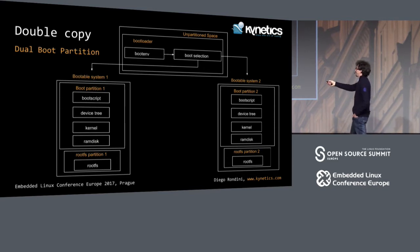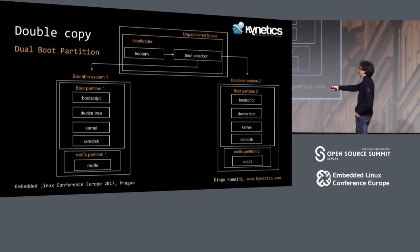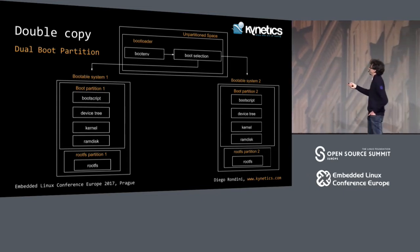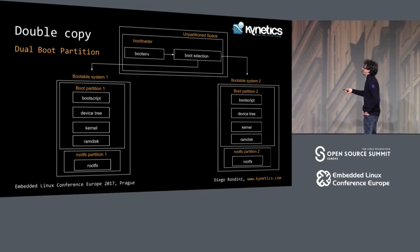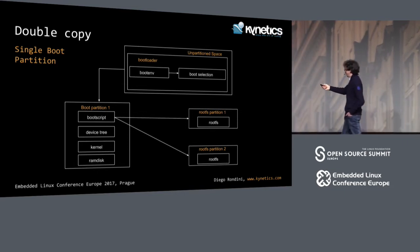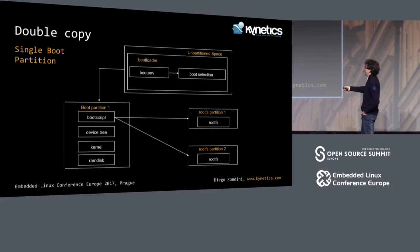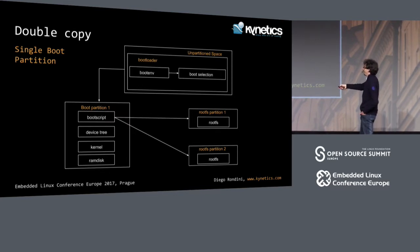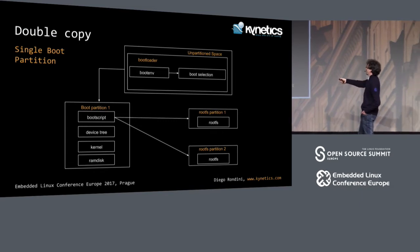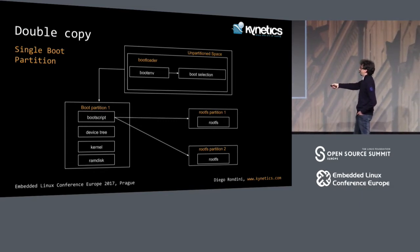A good implementation of double copy has not only the root partition doubled, but also the boot partition — your boot script, device tree, DTB files, the kernel and any RAM disks. Having two copies even of the boot partition is a good approach, because if you leave out the boot partition, you risk having no copy of it. Without doubling the boot partition, you don't have a clear policy to update it — you can easily switch from one rootFS to the other, but the boot partition update policy is unclear.